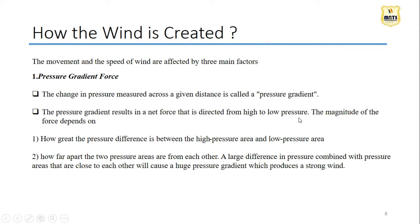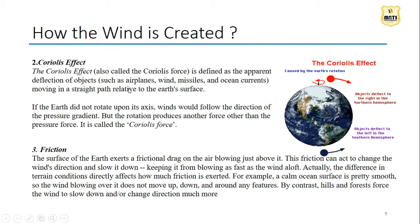Now, how is wind created? There are three factors. First, pressure gradient force - a change in pressure measured across a distance. These pressure gradient forces result in a net force directed from high pressure to low pressure. This pressure gradient creates unevenness of air flow, which creates the wind or changes the speed of permanent winds like planetary winds.